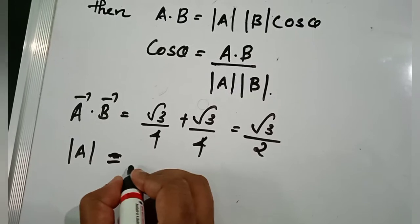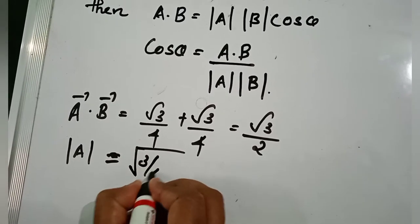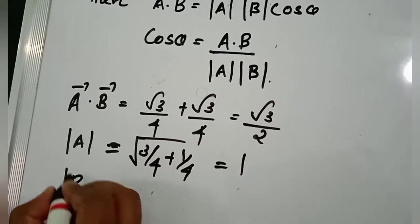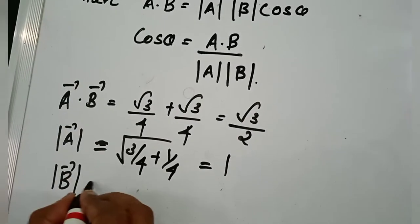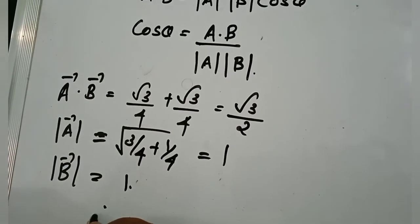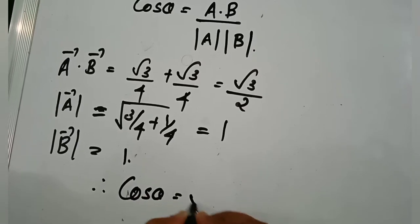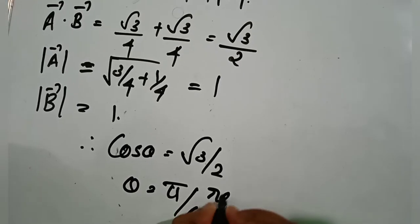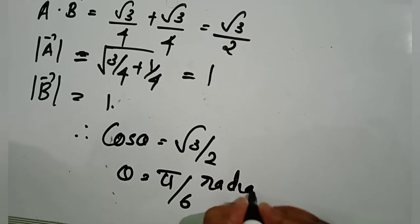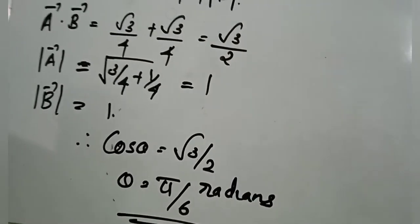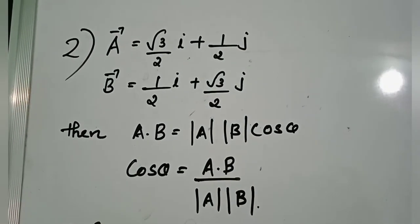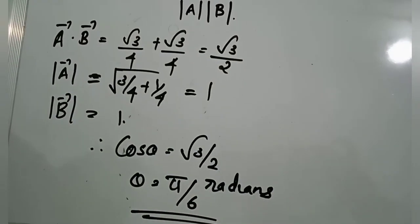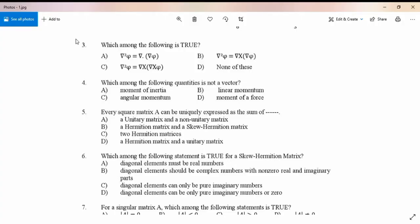Mod a = √(3/4 + 1/4) = 1, and mod b = 1. Therefore cos θ = √3/2, so θ = cos⁻¹(√3/2) = π/6... and the angle between the vectors is 5π/6 radians.